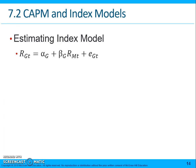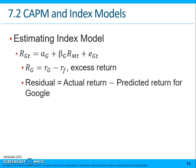To estimate the model, here we're going to talk about Google. R sub G,T stands for the excess return for Google during period T, and it is equal to the alpha for Google plus the beta for Google multiplied by the excess return on the market, plus those firm-specific effects specifically for Google. R sub G is just the excess return for Google. The residual is the actual return minus the predicted return during a given period.